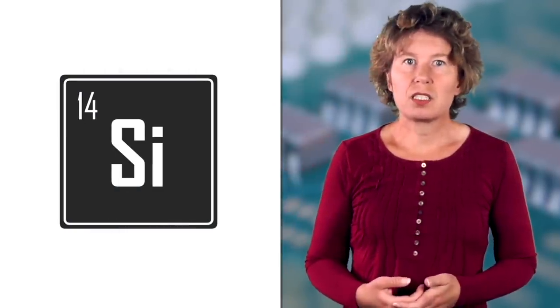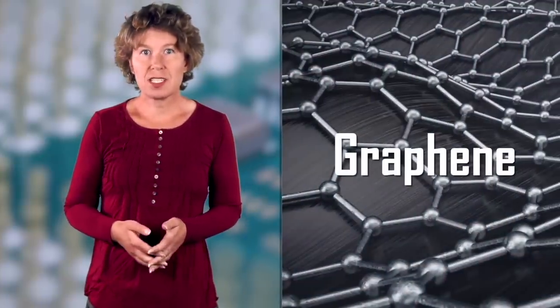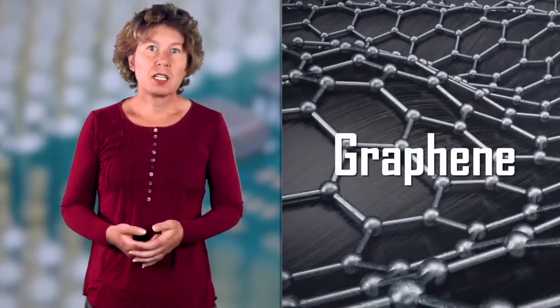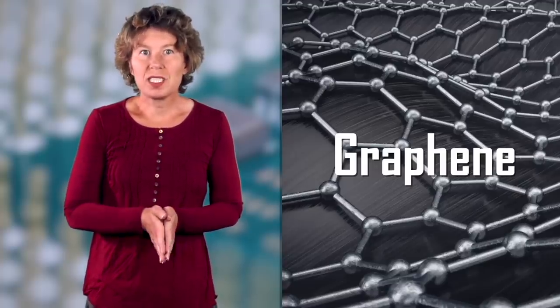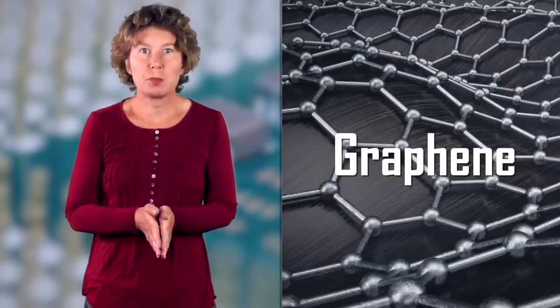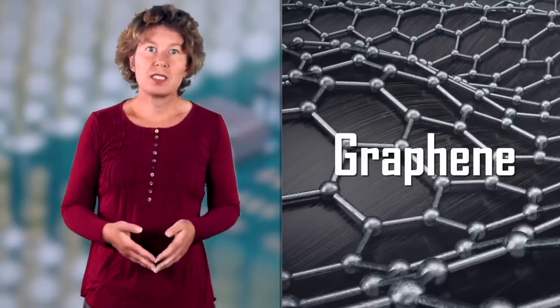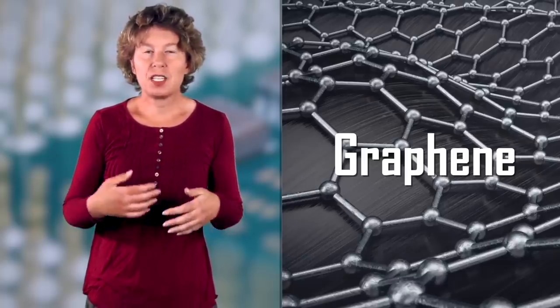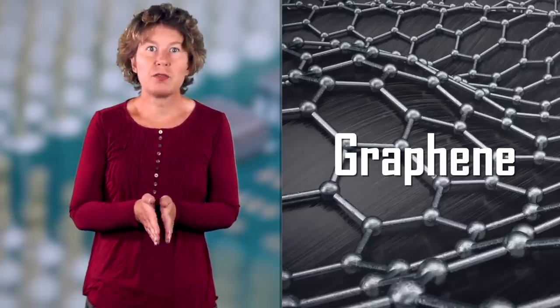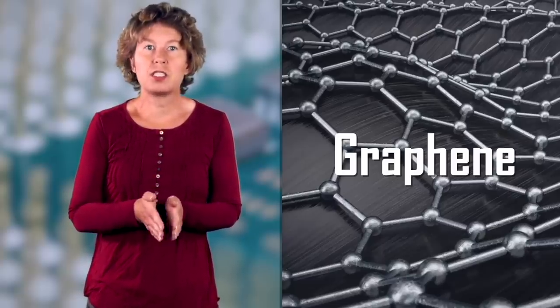Transistors have traditionally been made by adding impurities to silicon. But some new materials might be better suited to shrinking them down. The first one is graphene that could be used for the conducting channel on the transistor. Graphene is a single layer of carbon atoms set up in a honeycomb pattern. It has some qualities that make it seem ideal for microchip applications. Most importantly, it gets rid of heat very efficiently. So it's rather unsurprising that the idea of graphene transistors has been around ever since the material was discovered in 2004.